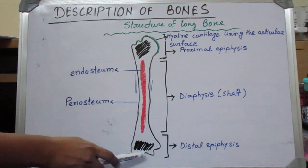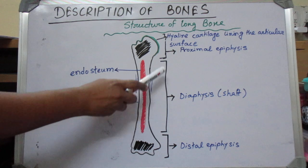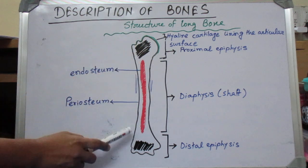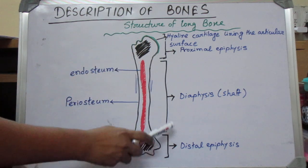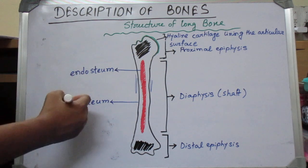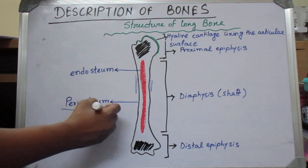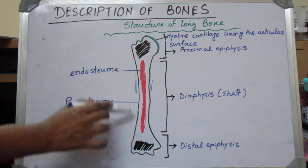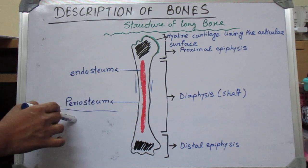The bone is externally lined by, or covered by, a layer of fibrous membrane called the periosteum.